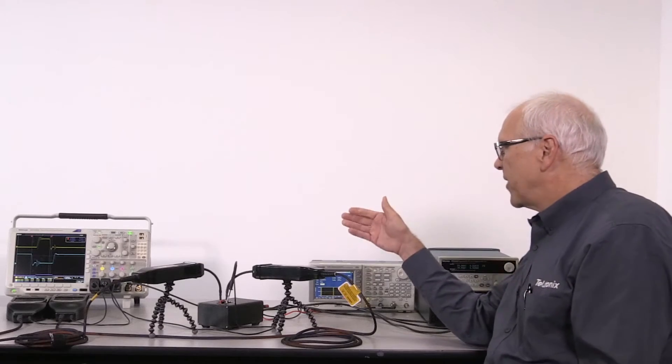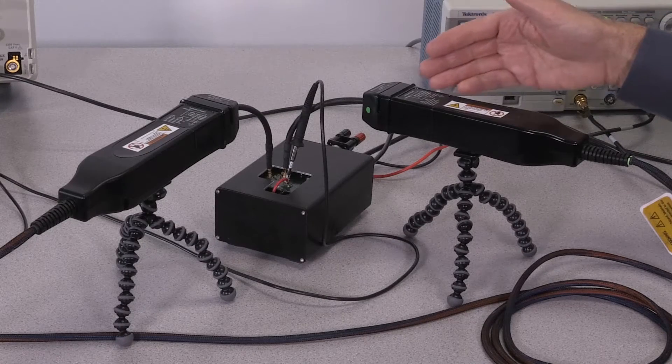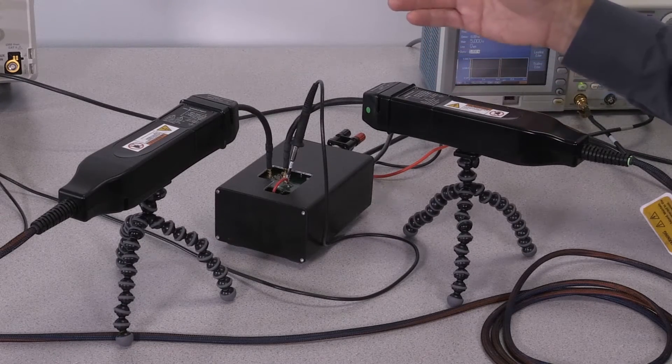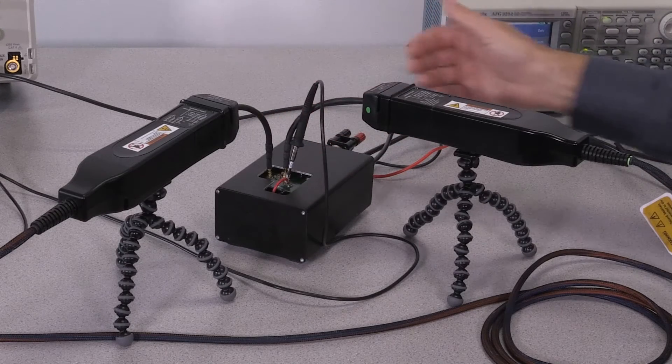The measurement we're making is high-side and low-side VGS measurements on a half-bridge switching circuit, which uses two EGAN FETs as the switches.